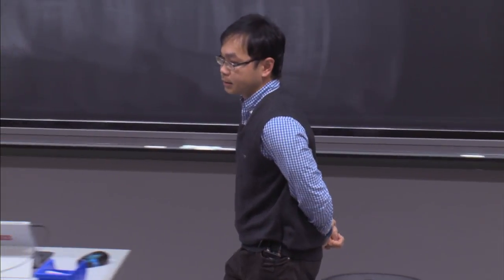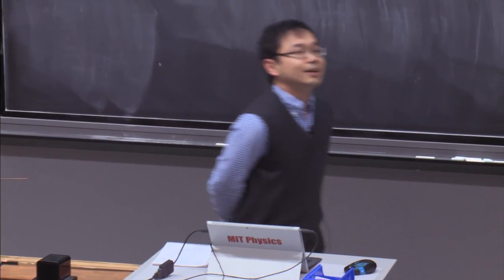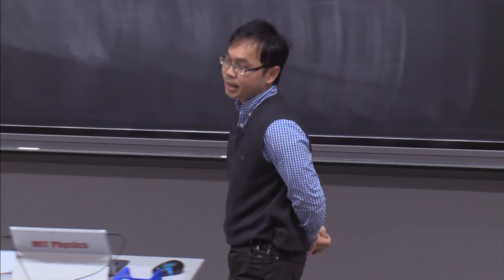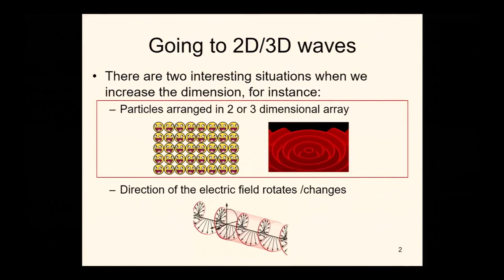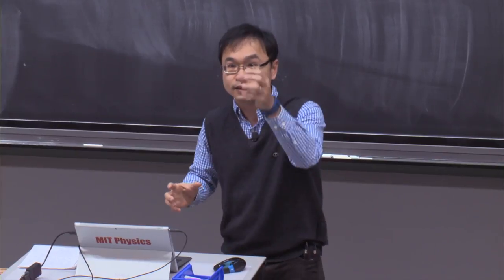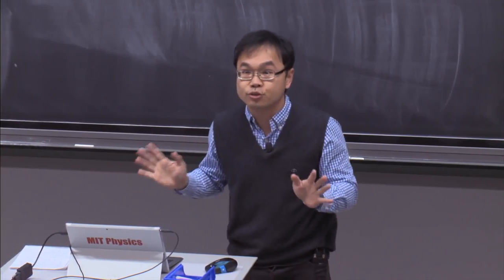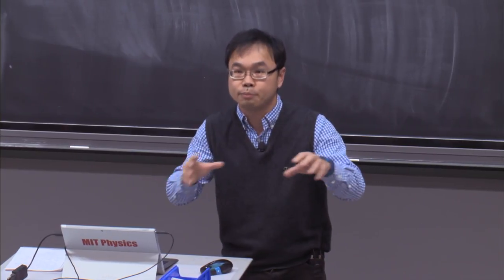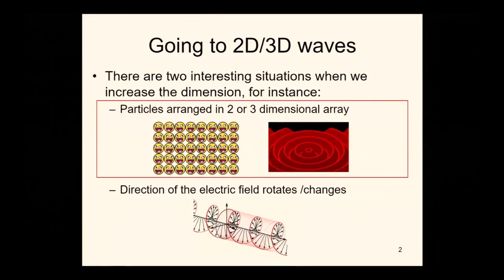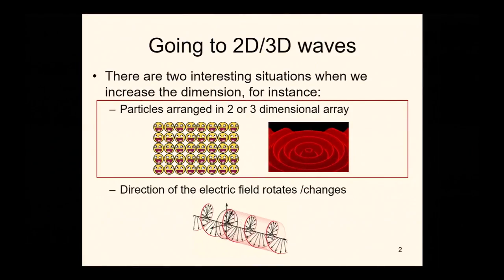Let's get started. Today we are going to continue our discussion on two-dimensional and three-dimensional waves. As I mentioned before, there are two interesting situations in which we can increase the dimension. For example, I can have all the objects oscillating in just one dimension or direction, but change the way I place all those objects in space — for example, particles arranged in two or three-dimensional arrays.